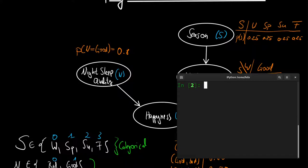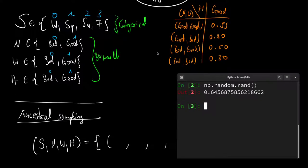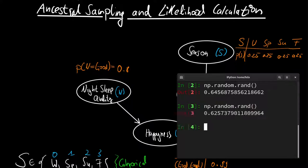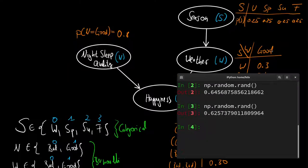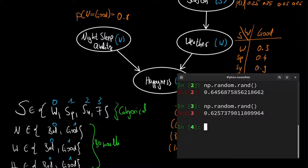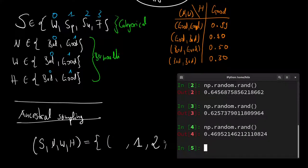Let's first start with the night sleep quality. We take a random variate from zero to one — it's 65%, which is below 80%, so we have a good night sleep: one. Then we draw a season — it's 62%, so it's between spring and summer, meaning it is summer: two. Then we draw the weather. We're in summer with a 90% chance of good weather. It's 46%, which is below 90, so we have good weather.